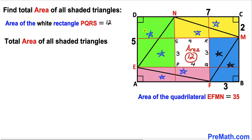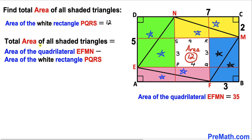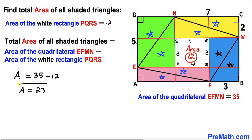Now let's find the total area of all the shaded right triangles. The total area of all shaded triangles equals the area of quadrilateral EFMN minus the area of white rectangle PQRS. The area of EFMN is 35 square units, and the area of PQRS is 12 square units. Therefore the total area equals 35 minus 12, which is 23 square units.